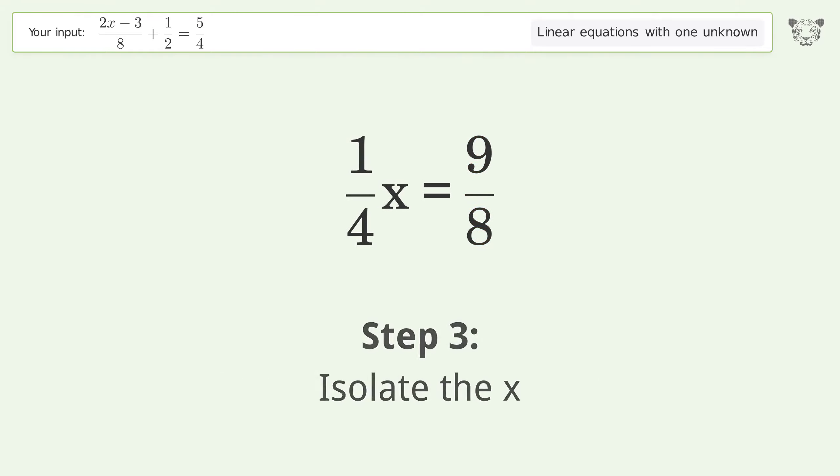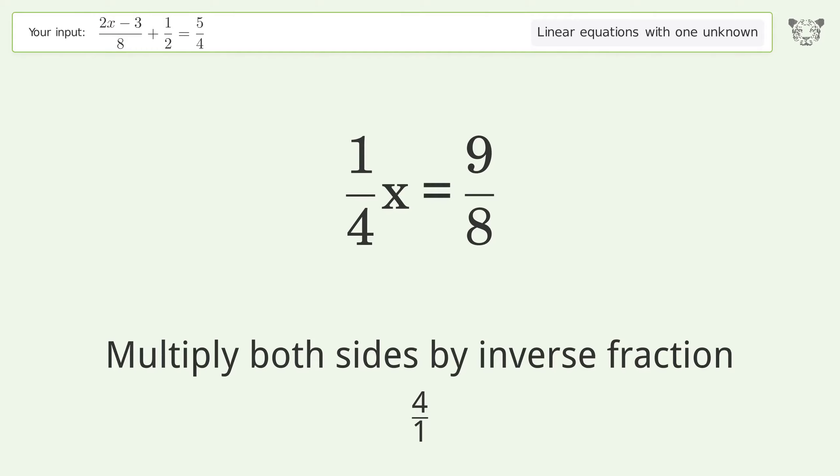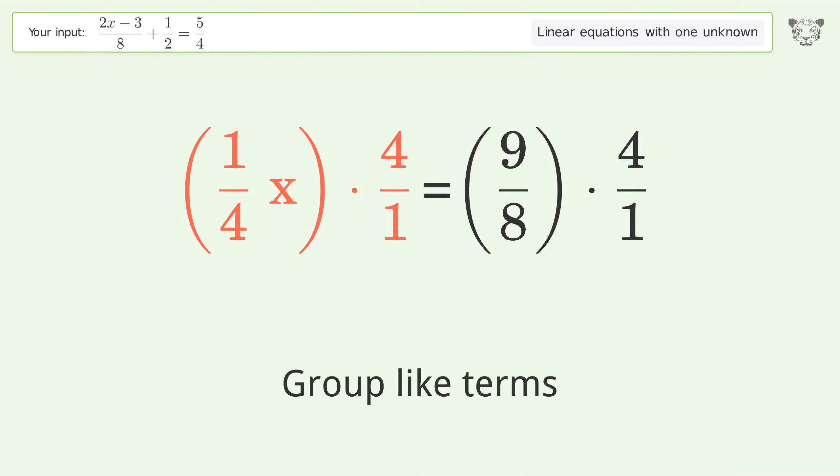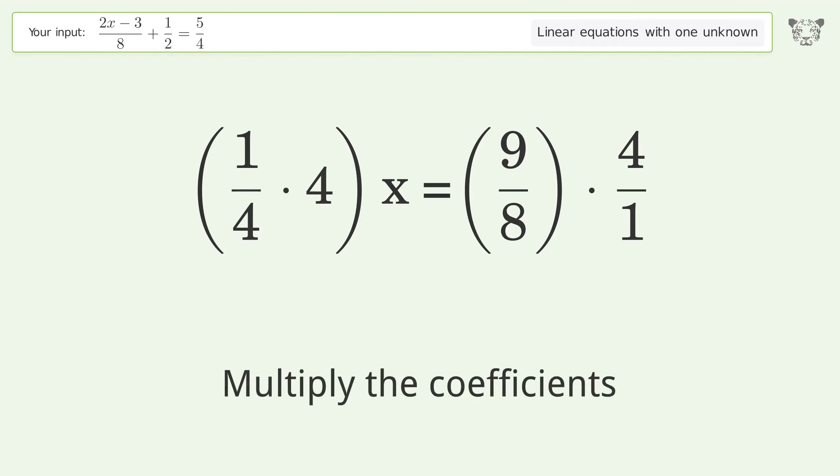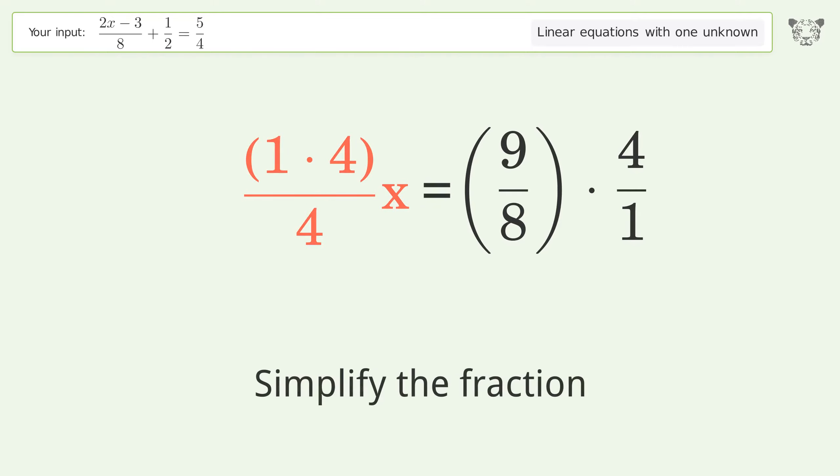Isolate the x. Multiply both sides by inverse fraction 4 over 1. Group like terms. Multiply the coefficients. Simplify the fraction.